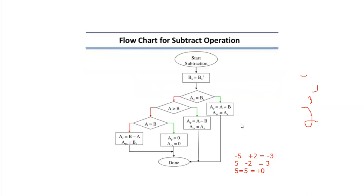Now the flowchart for the same. What we have seen here is a flowchart for subtraction. First, you complement the sign bit, then check whether they are equal. If both sign bits are equal, you add the data — both A and B — and substitute the sign bit of A for the result. If not, you check whether A is greater than B. If it is greater, do A minus B and attach the sign bit of A for the result. If no, check whether both numbers have the same value — in which case the result will be zero — and the sign bit will also be positive.